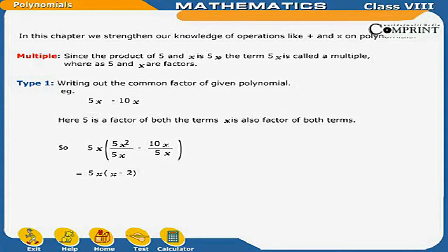Type 1: Writing out the common factor of a given polynomial. For example, 5x² minus 10x. Here 5 is a factor of both terms, and x is also a factor of both terms. So taking out 5x: (5x² minus 10x) divided by 5x gives 5x multiplied by (x minus 2).